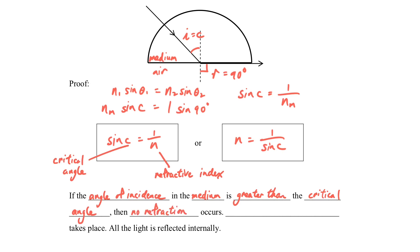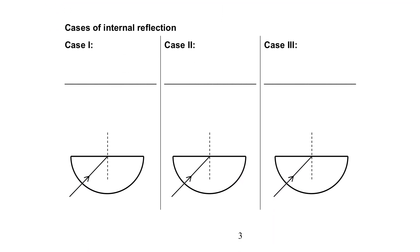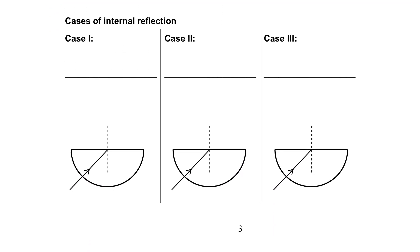Why do we need this critical angle? Because we want to predict when we will have total internal reflection. If the angle of incidence in the medium is greater than the critical angle, then we will observe total internal reflection. One important point to emphasize: this critical angle is usually not found in a diagram. Even though it is called an angle, its nature is similar to the refractive index — it is a reference number for us to do comparison and to predict when total internal reflection will occur. It just depends on the refractive index of the medium.